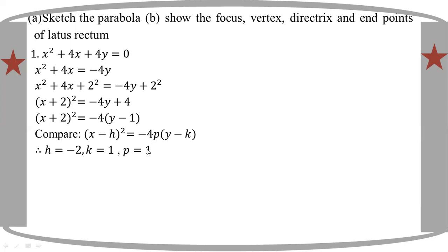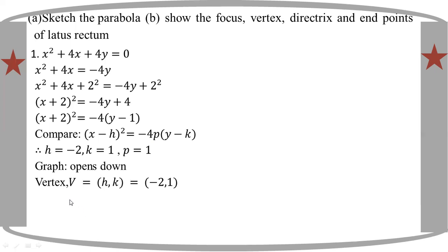This gives us k and p values. The vertex is at (h, k), which is (minus 2, 1). We are going to identify the vertex as (minus 2, 1).